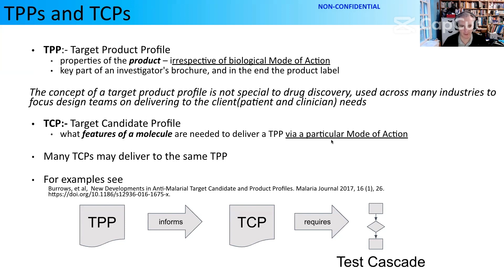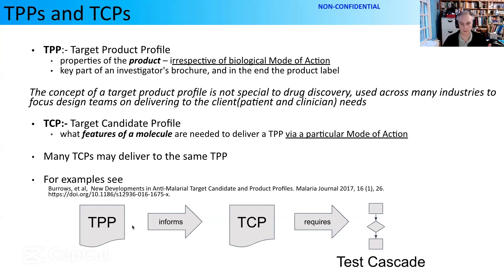But each one will be specific to a mode of action. There's a really good paper by Jeremy Burrows on anti-malarial TCPs and TPPs — I'd recommend that as a read. This clinical set of outcomes should inform what we write for the TCP, and they in turn require a test cascade. From the point of view of running a project and progressing compounds through a test cascade, we should have line of sight all the way out to what that's going to mean at the bedside. If you've got things specified in the TPP and TCP that aren't in your test cascade, you can't deliver them.